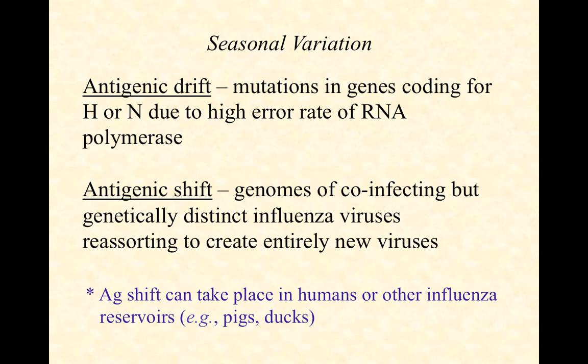At the heart of the immune system is the principle of distinguishing self from non-self. We have something called immunological memory, where we have cells and molecules that take essentially a snapshot at the molecular level of pathogens they've seen before. They don't take a picture of the entire pathogen — they take a picture of a tiny little fragment of a molecule on that pathogen, called an epitope.